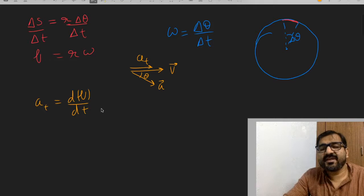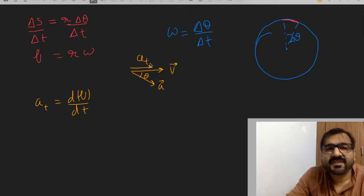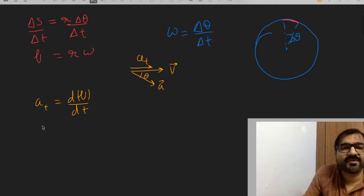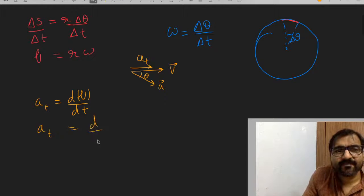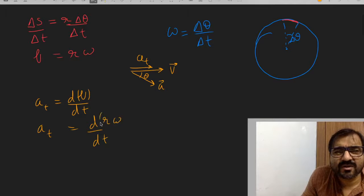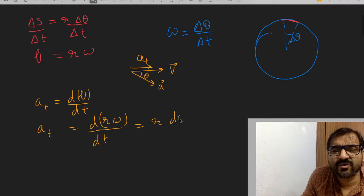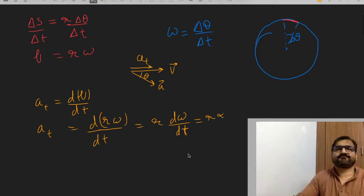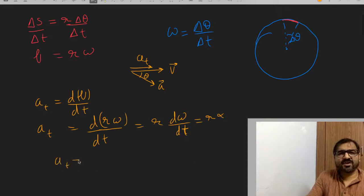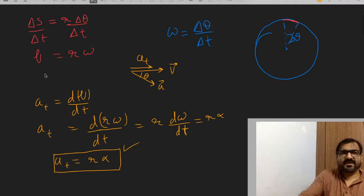This tells us how fast the speed is changing. So if we put the formula for speed on both sides, we get d by dt of r omega, which is r times d omega by dt, which is r times alpha. So that is the relationship between tangential acceleration and angular acceleration that we need.